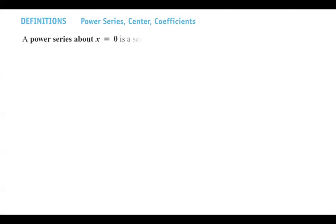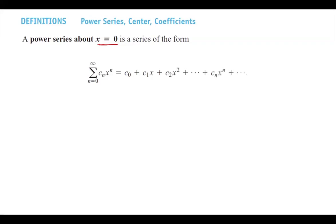Let's begin by a definition. A power series is defined as a regular series, but it has a variable like x involved in it. A power series about center x equal to 0 is a series of the form summation of c_n x to power n, which is c_0 plus c_1 x plus c_2 x squared and so on. We're just basically plugging in values for n and evaluating each term.